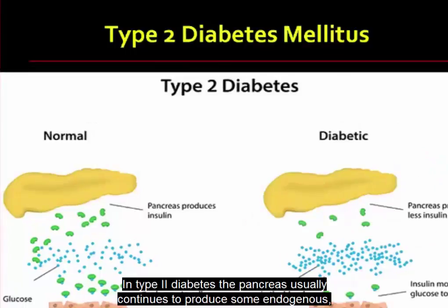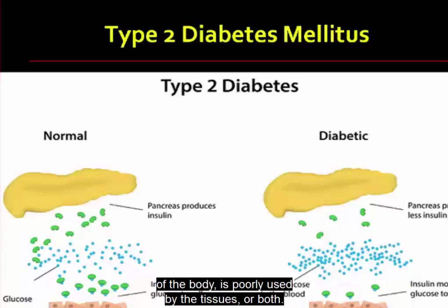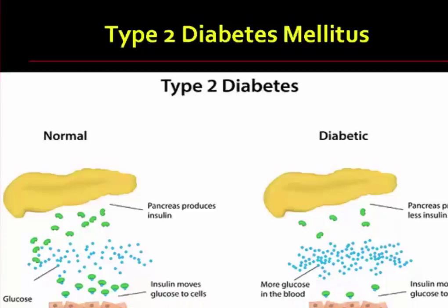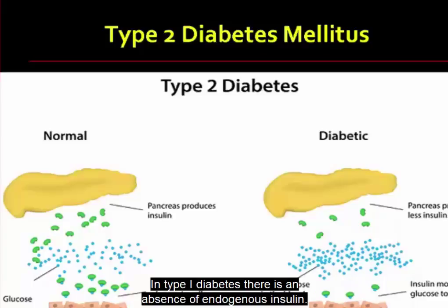In type 2 diabetes, the pancreas usually continues to produce some endogenous — that is, self-made — insulin. But the insulin produced is insufficient for the needs of the body, is poorly used by the tissues, or both. The presence of endogenous insulin is a major distinction between type 1 and type 2 diabetes. In type 1 diabetes, there is an absence of endogenous insulin.